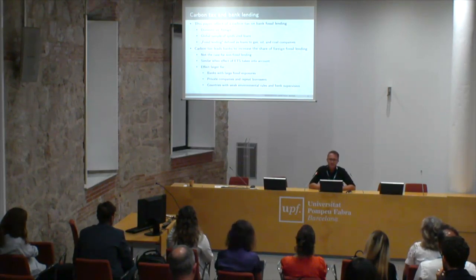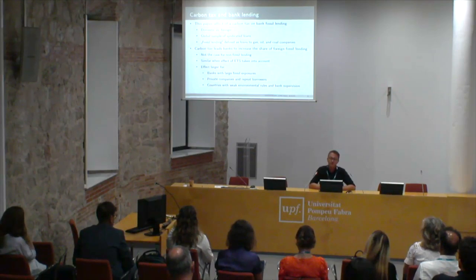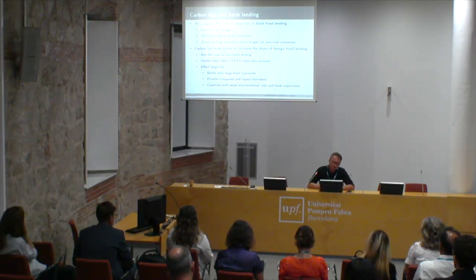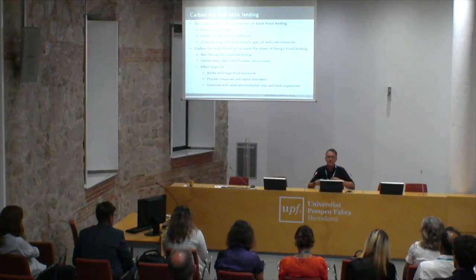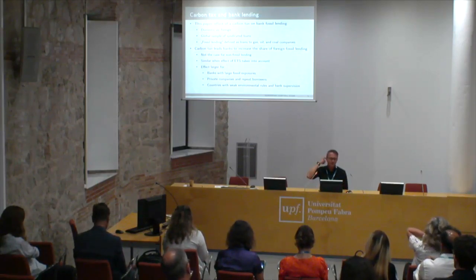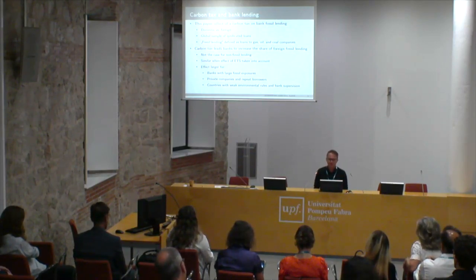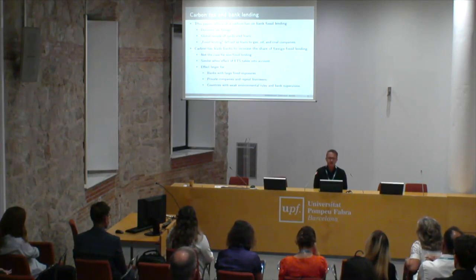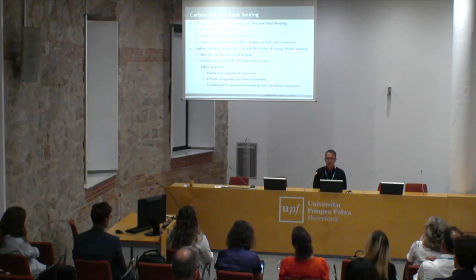We look at syndicated loans because the data are global, easy to obtain, and cover most cross-border loans by large banks to large companies. We define fossil lending as loans to gas, oil, and coal companies — the ones extracting fossil fuel from the ground — since, as the Paris Agreement recognizes, the solution is to keep fossil fuels in the ground. What we find is that as a result of imposing a carbon tax, banks in that country increase the share of foreign fossil lending and decrease the share of domestic fossil lending.